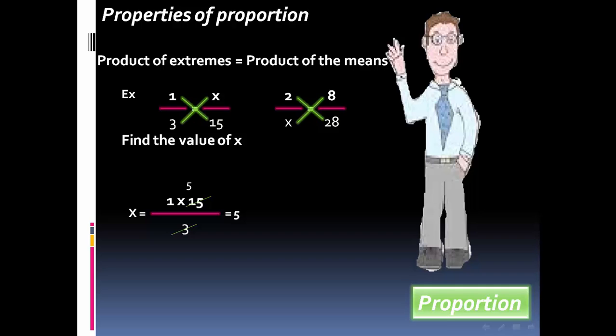In the second, 2 times 28 over 8 equals 7.